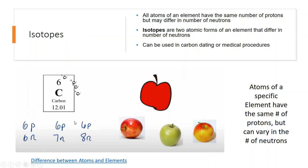One isotope of carbon would have an atomic mass of 12, another would have an atomic mass of 13, and another an atomic mass of 14, because atomic mass equals protons plus neutrons. A helpful analogy: the atomic number always identifies the element, just like you know an apple is an apple — but you have different varieties like Granny Smith, Red Delicious, or Fuji. Similarly, carbon always has six protons, but you can have different isotopes of that element.